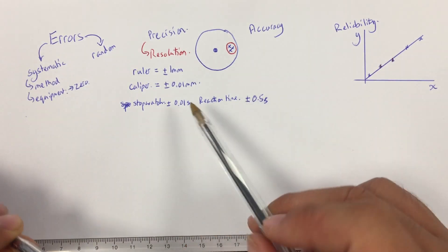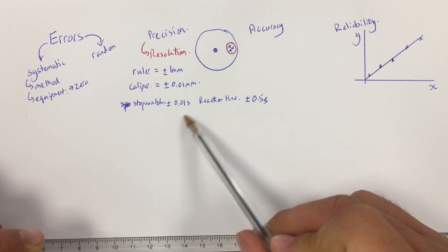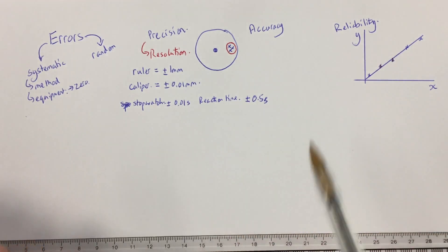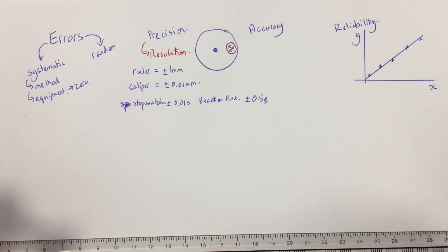Whereas if I was to use a light gate, I could probably get to this value quite easily. There's no issue of reaction time, so I could measure to this level of precision. So resolution is the smallest integer or smallest unit that a specific piece of equipment is capable of measuring.